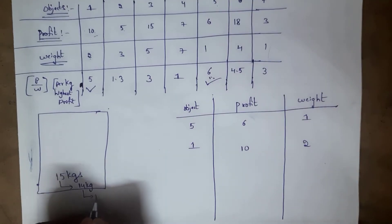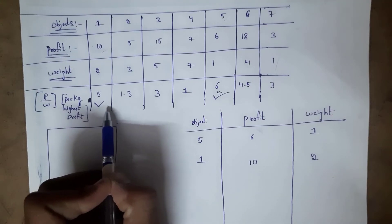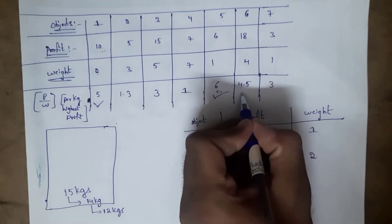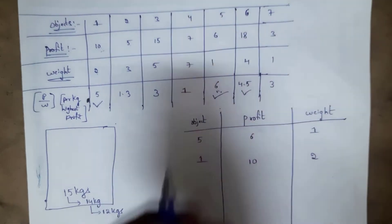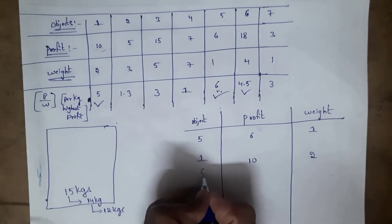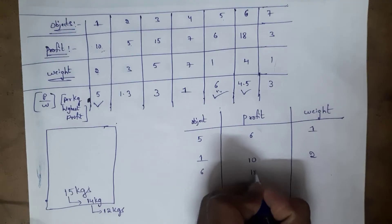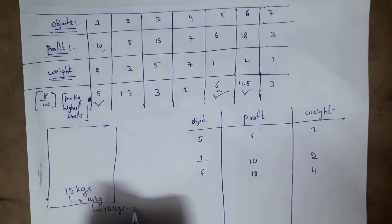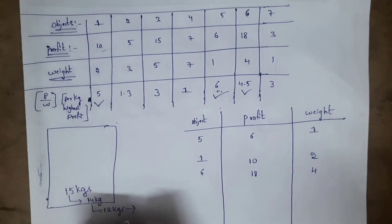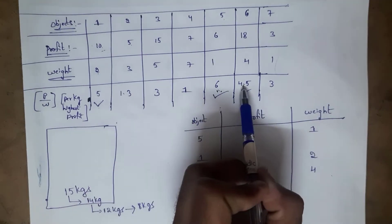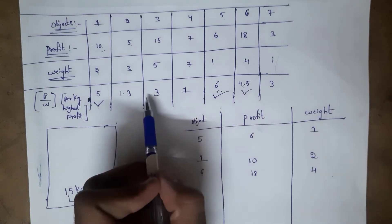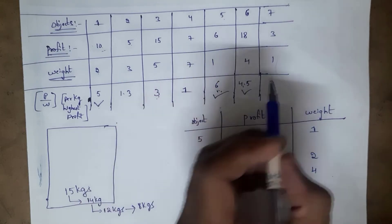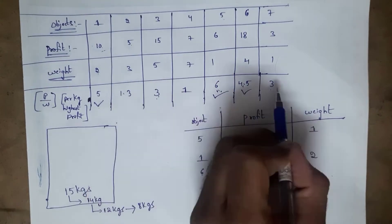After placing object 1, remaining capacity is 14 - 2 = 12 kg. Next highest profit per kg is 4.5, so I select object 6 — profit is 18 and weight is 4 kg. After placing object 6, remaining capacity is 12 - 4 = 8 kg.